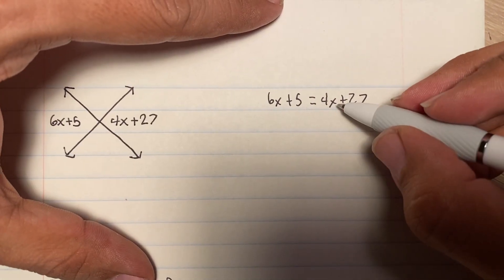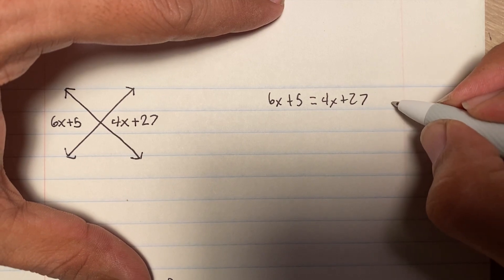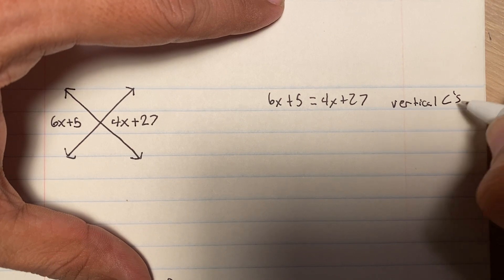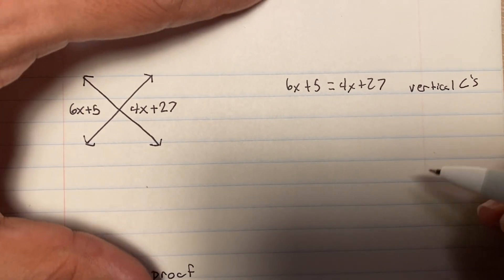How do I know they're equal to each other? Because they are vertical angles. I'll write this symbol for angles for now, just a shorthand for it.